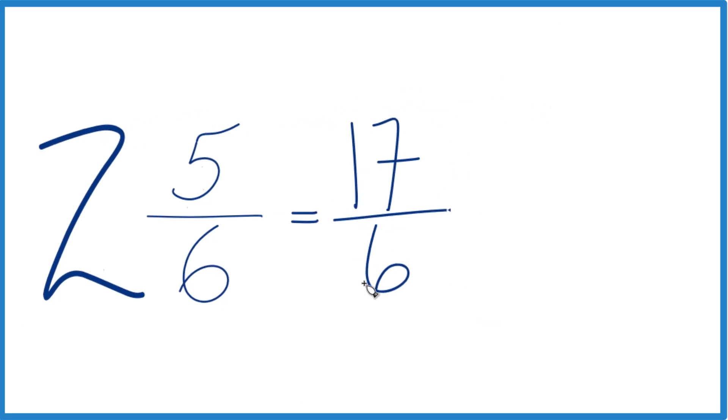We can even check our work here. 6 goes into 17 just 2 times. 2 times 6 is 12, so we have 5 left over. Bring the 6 across, and we have 2 and 5/6. That's what we started out with.